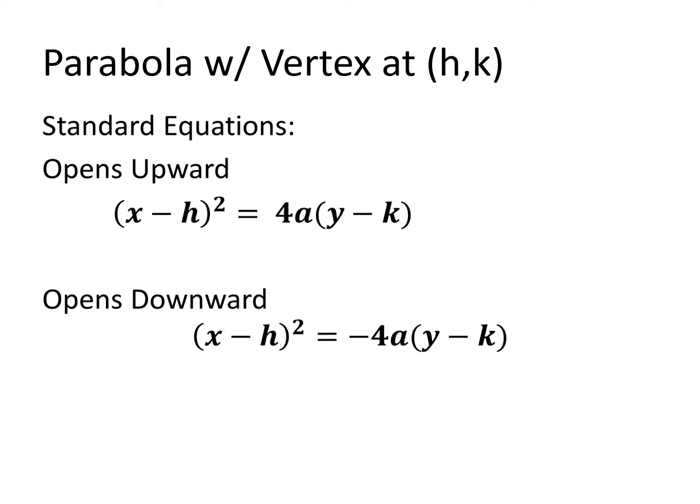Hello everyone, welcome to our video lesson about parabola with vertex at (h,k). When we say the vertex is at (h,k), it means it is not at the origin (0,0), but it can be anywhere on the Cartesian plane — along the y-axis or x-axis but not at the origin, or on any quadrant: first, second, third, and fourth. We will now discuss the standard equations of the parabola with vertex at (h,k).